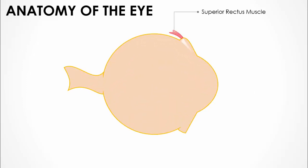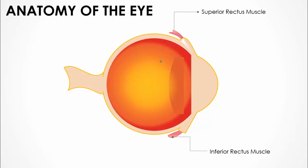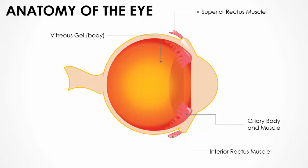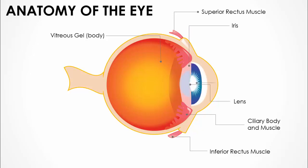On the front side you have the superior rectus muscle, and below you have the inferior rectus muscle. Then you have the vitreous gel. At the front you have the ciliary body and muscle, the iris, and the lens — and this is the pupil.